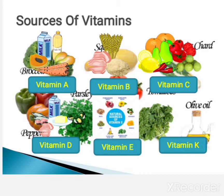Some important sources of vitamin K are cabbage, tomatoes, spinach, and soya bean. Similarly, some important sources of vitamin E are soya bean, vegetables, vegetable oils, leafy green vegetables, sprouts, cereals, eggs, etc.